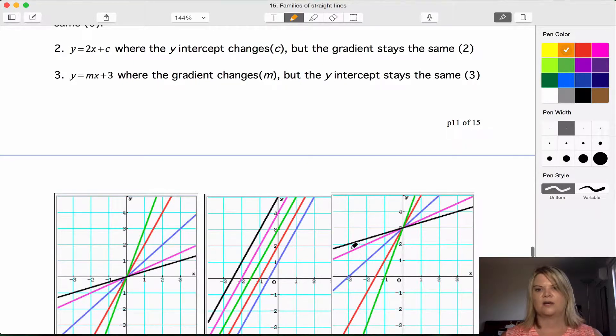So we've got again y equals a half x plus 3, y equals a third x plus 3, y equals 1x plus 3, y equals 2x plus 3, and y equals 3x plus 3. They're all going through the plus 3 at the y intercept there.